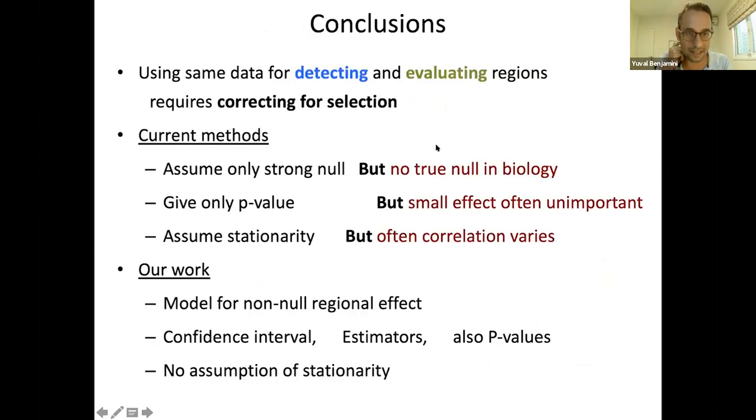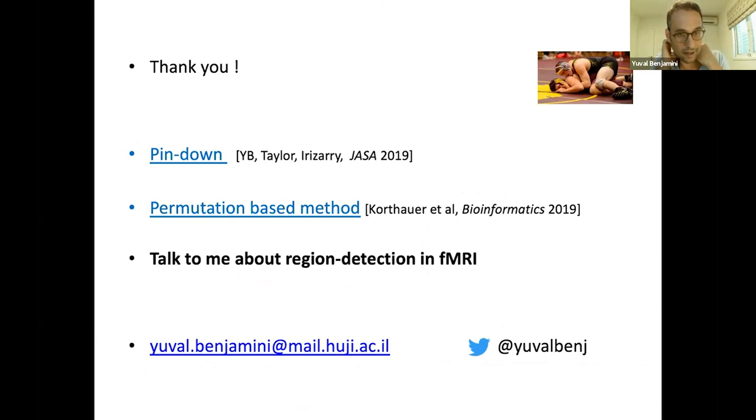I'll stop here and just remind you that you should not use the same data for detecting and evaluating. If you use the same data for detecting and evaluating, you need to work more. Most of the methods currently only give you p-values against the strong null. But our work, by using conditional inference, with no assumption of stationarity, gives you confidence intervals in models that work even under non-null. We have with Keegan permutation-based methods that also work on single cell and with much smaller samples. You can check that out. Thank you.